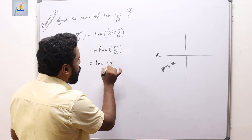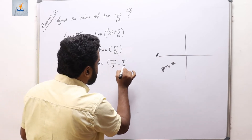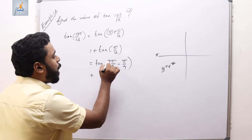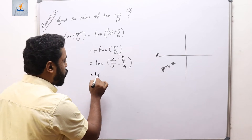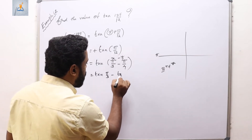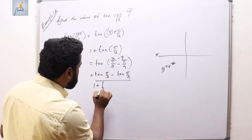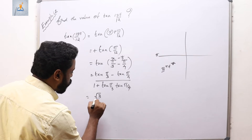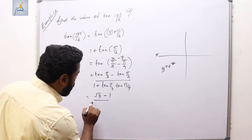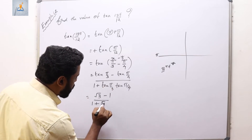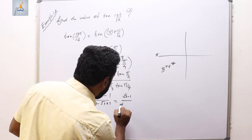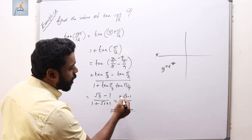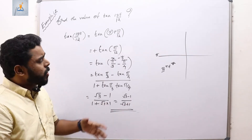tan(π/12) can be split as tan(π/3 − π/4), since (4π − 3π)/12 = π/12. Applying the formula tan(x−y) = (tan x − tan y)/(1 + tan x·tan y): tan(π/3) = √3 and tan(π/4) = 1, so the result is (√3 − 1)/(1 + √3·1) = (√3 − 1)/(√3 + 1). You can further rationalize by multiplying numerator and denominator by (√3 + 1).